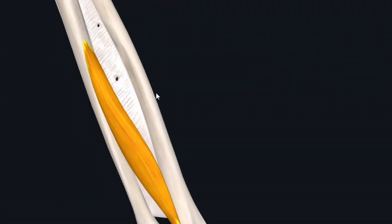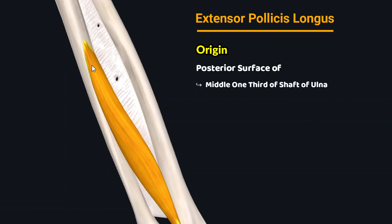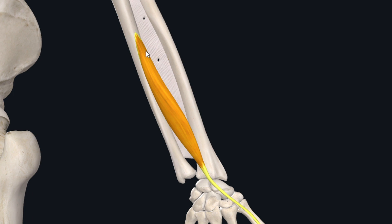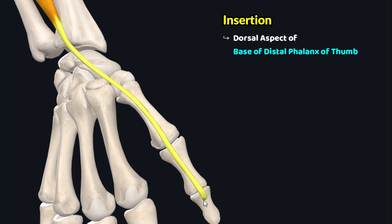The third muscle is the extensor pollicis longus. This muscle has its origin from the posterior surface of the middle one-third of the shaft of the ulna and the adjacent interosseous membrane of the forearm. The fibers form a muscle belly which travels down inferolaterally, and just superior to the wrist joint this muscle belly forms a tendon. This tendon crosses the wrist and travels down towards the thumb, inserting onto the dorsal aspect of the base of the distal phalanx of the thumb.